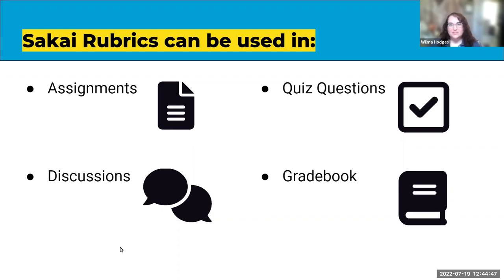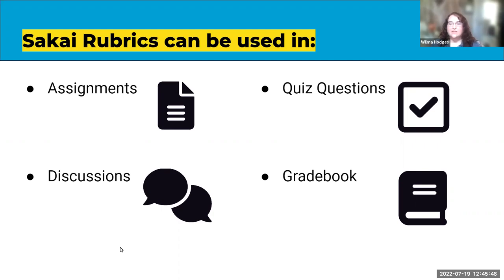You can also attach rubrics to the Discussions tool — that's the current legacy discussion tool. The new Conversations tool will eventually replace it, and rubric grading capability is still being built out for Conversations but it's not quite there yet. You can also attach rubrics to Gradebook items directly, which works great for in-class assignments you're not collecting in Sakai but just posting grades for.